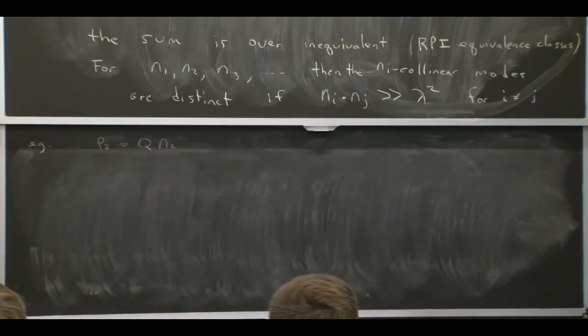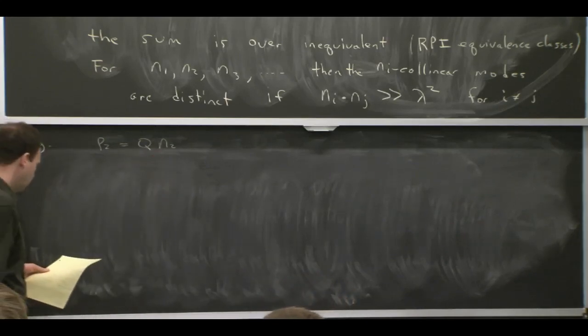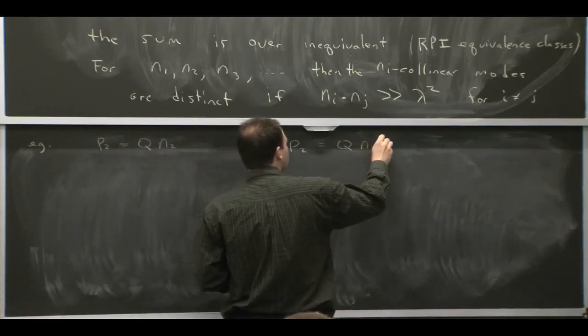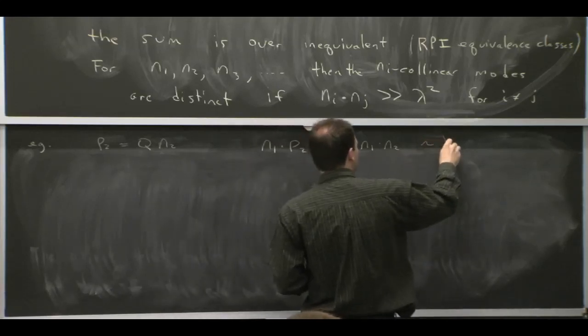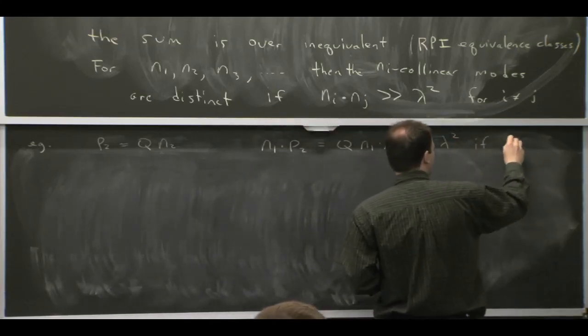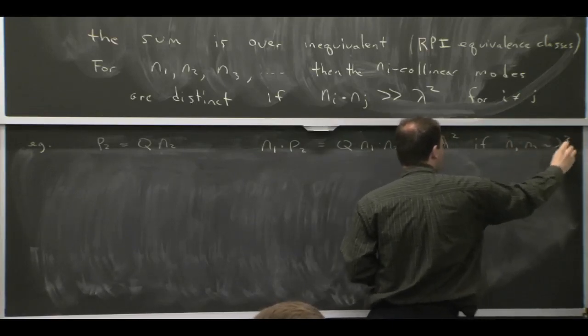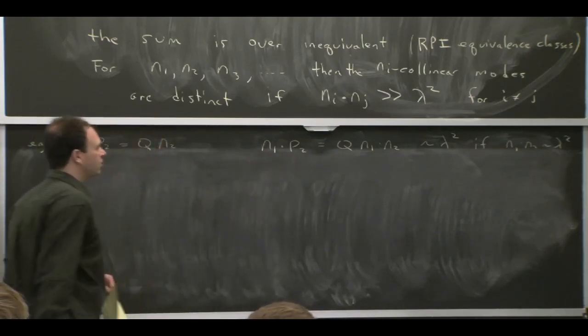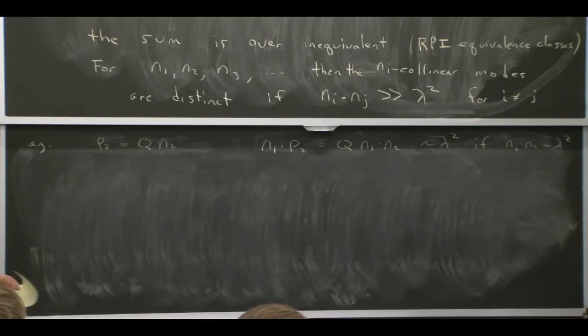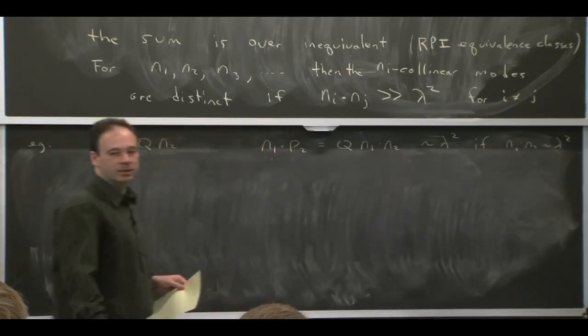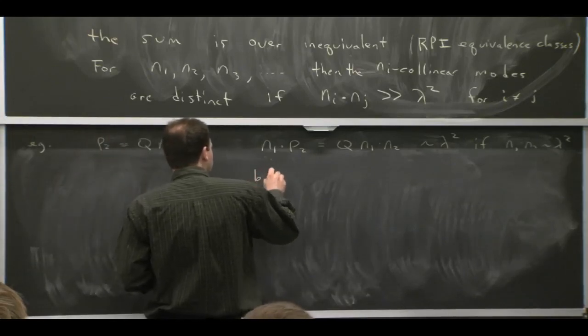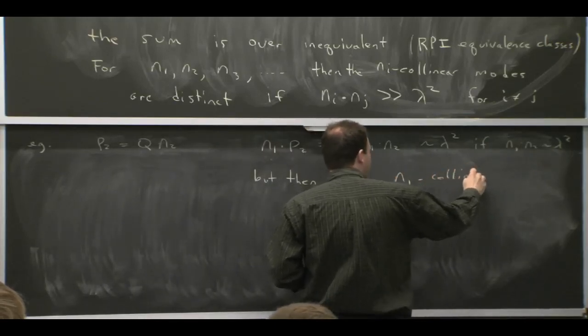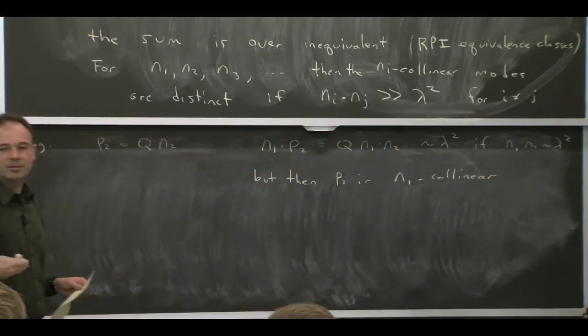Let's imagine you have some momentum p2, which is a large piece times n2. And then you dot n1 into it. So n1 dot p2 is Q n1 dot n2. And that would be of order lambda squared if n1 dot n2 were of order lambda squared. But if n1 dot n2 are order lambda squared, and therefore n1 dot p2 is order lambda squared, you would say p2 is an n1 collinear particle, because this is the right power counting for an n1 collinear particle. So it's both n1 collinear and n2 collinear. And that just means n1 and n2 are just two members of the same equivalence class.